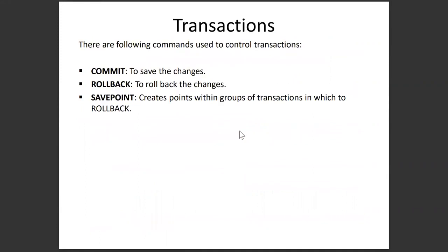I was using commit and rollback back and forth. There are basically three commands involved in handling a transaction properly. Commit saves the changes, rollback reverts the changes, and savepoint creates a point within a group of transactions to which you can rollback. For example, if a stored procedure is writing hundreds of transactions, you can create different savepoints to decide where to roll back — all the way to the start, or only to a specific checkpoint partway through.